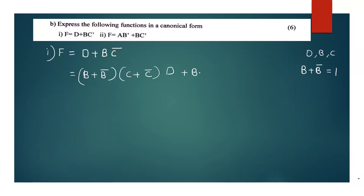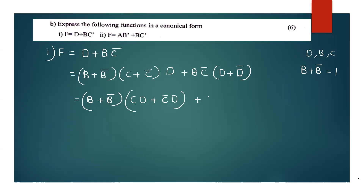So b plus b complement and c plus c complement each equal 1. This gives us d plus d complement terms. We multiply through to get: c complement d, then b into c complement d plus b complement c complement d.